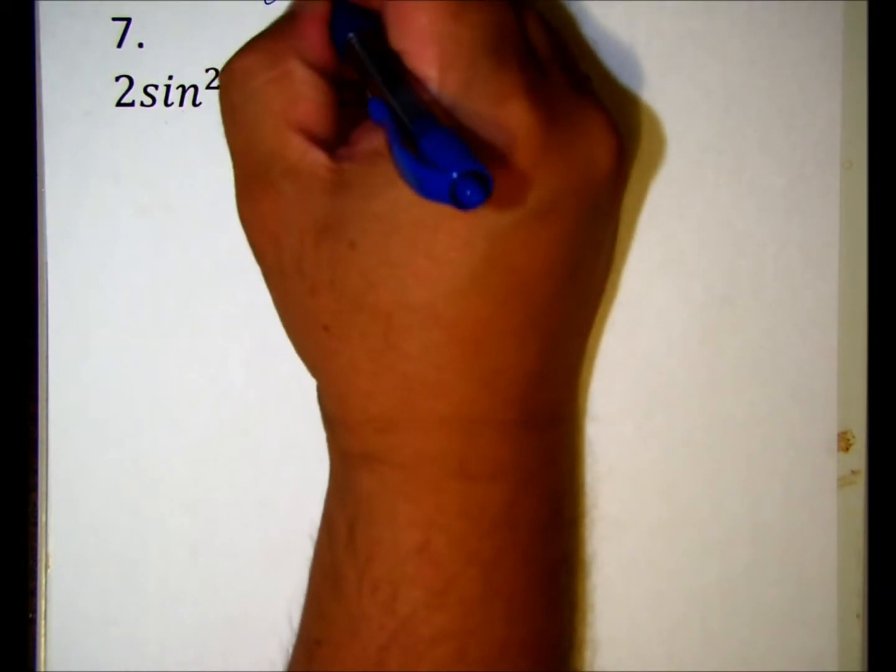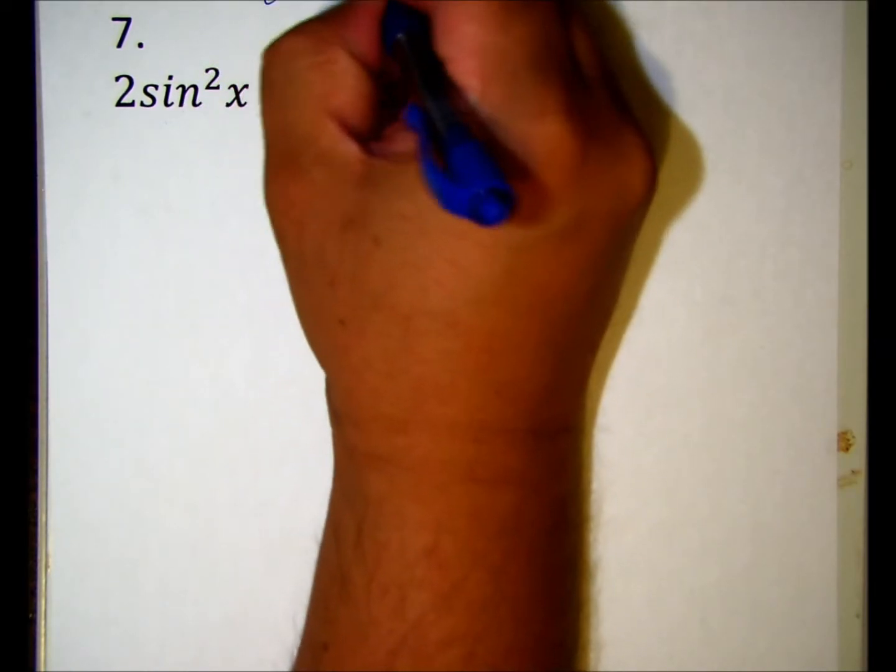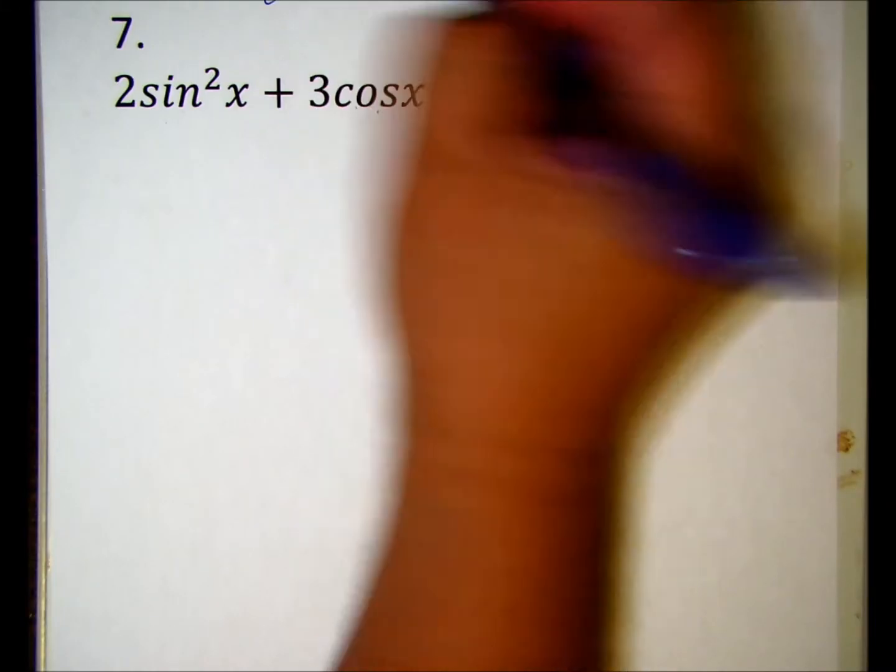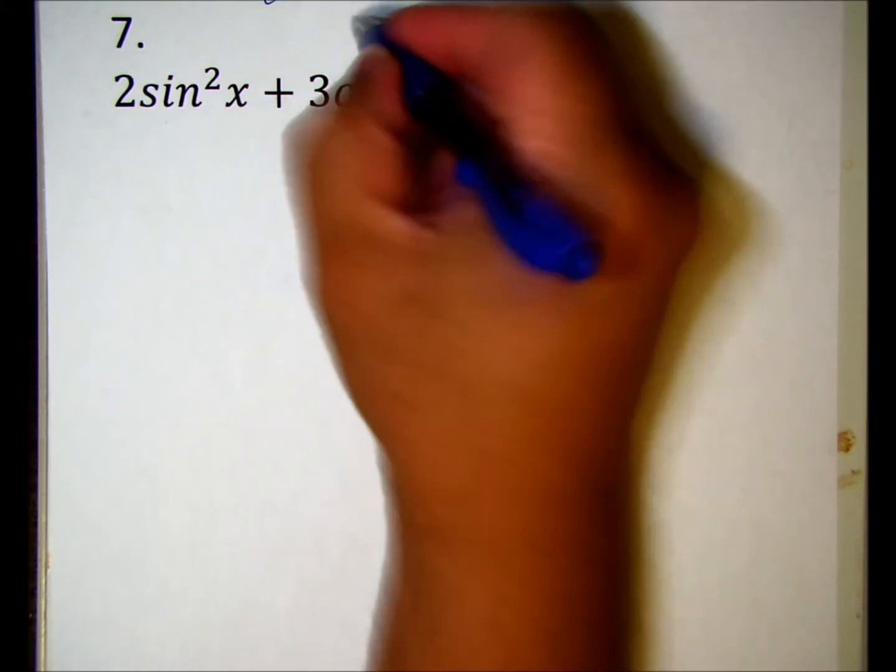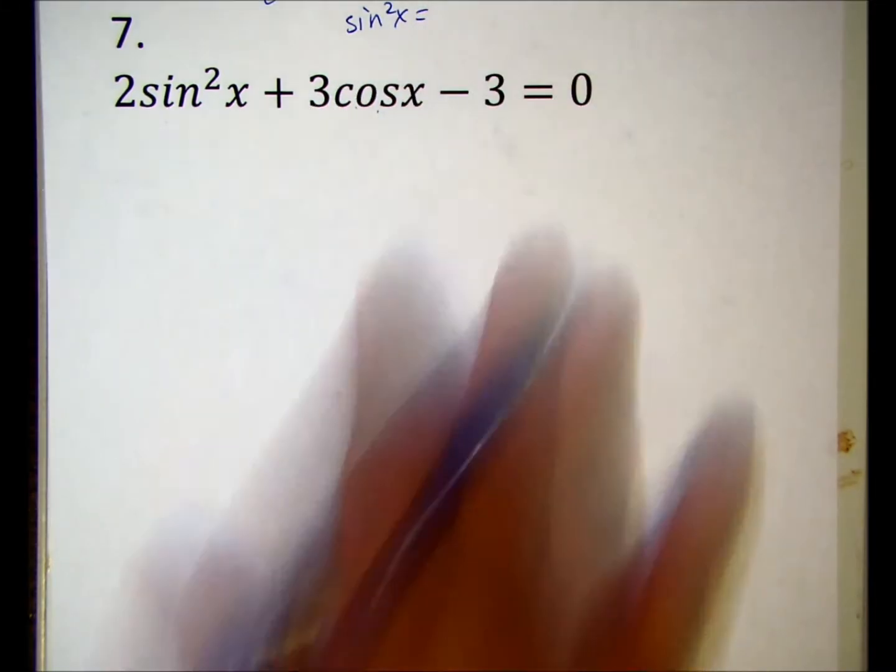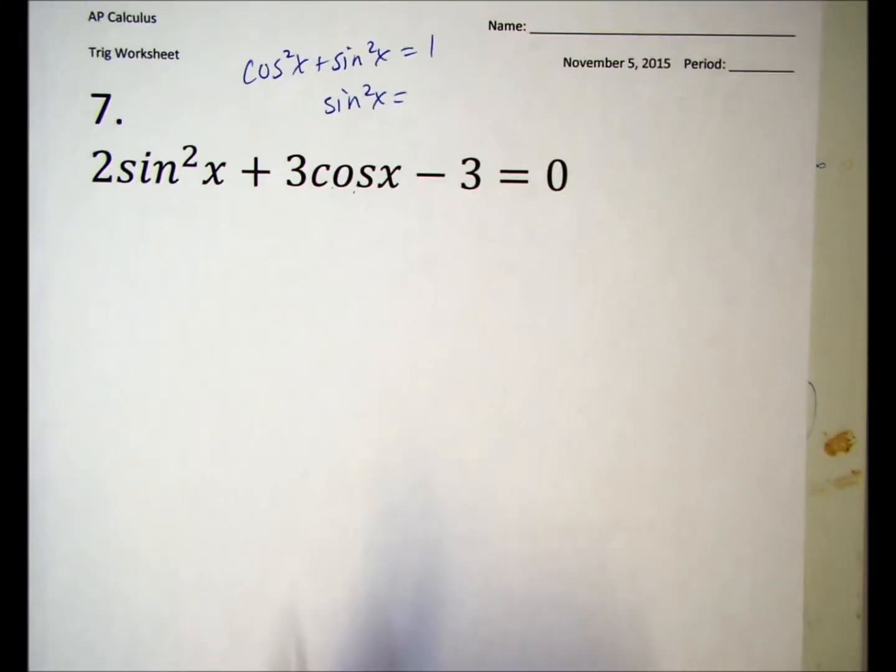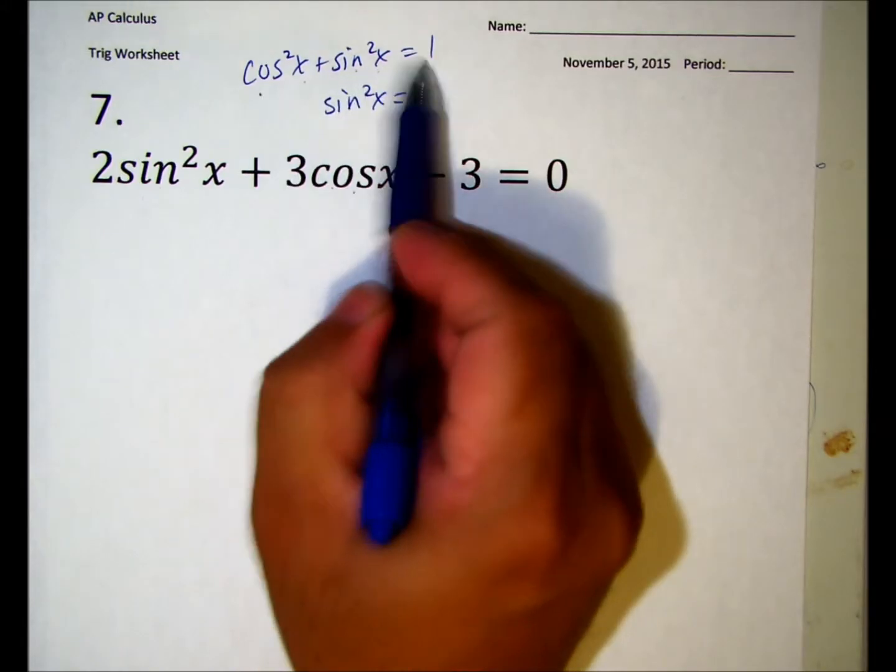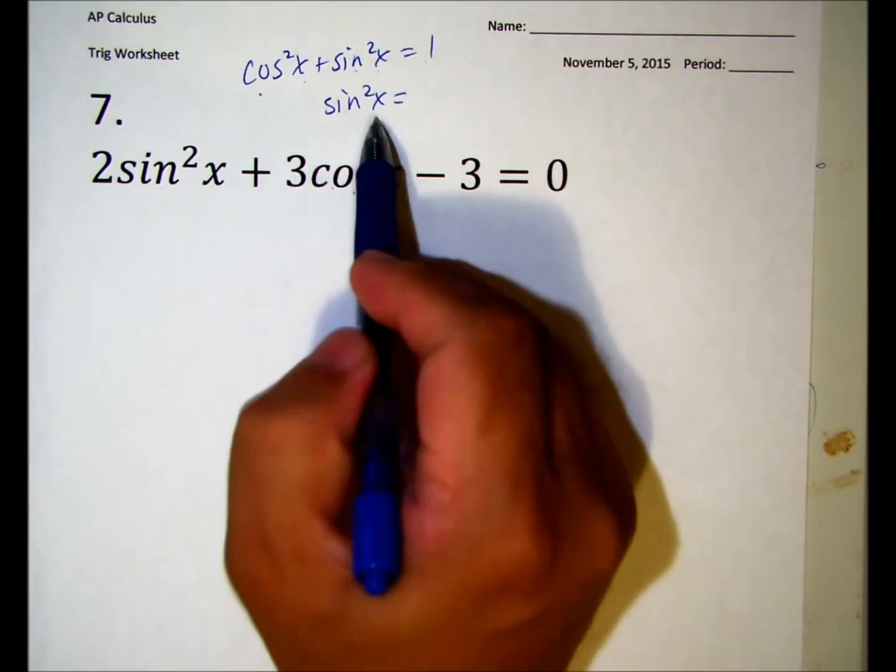Remember this identity: cosine squared x plus sine squared x equals one. That means sine squared x equals one minus cosine squared x.